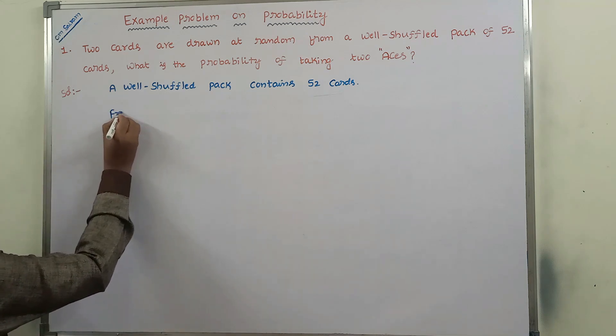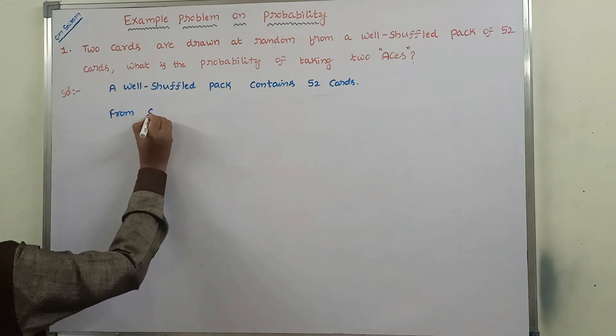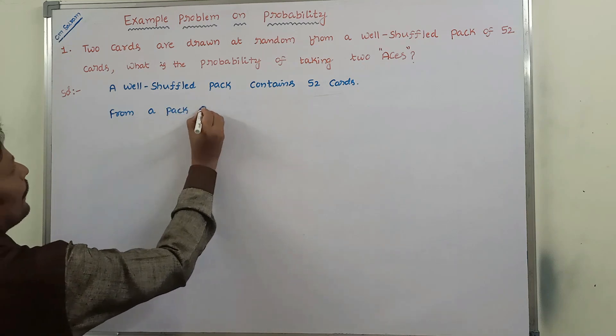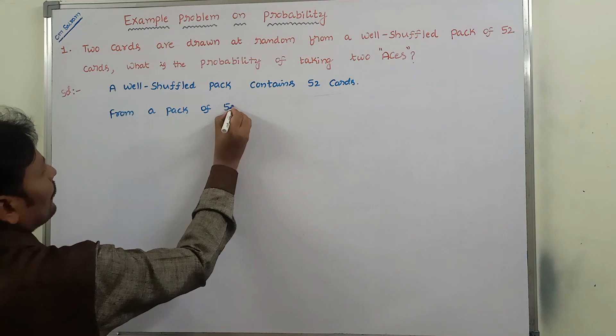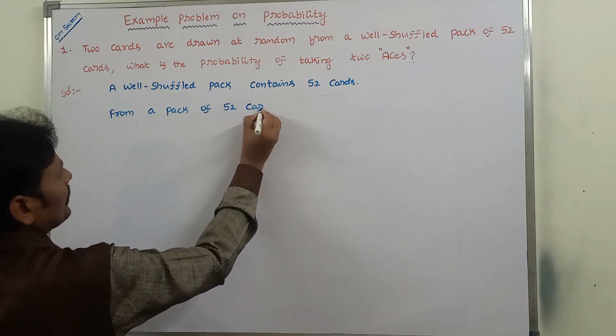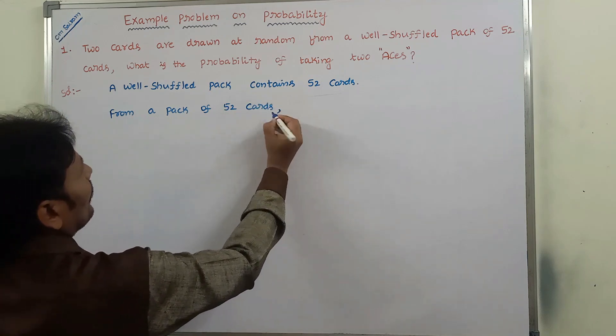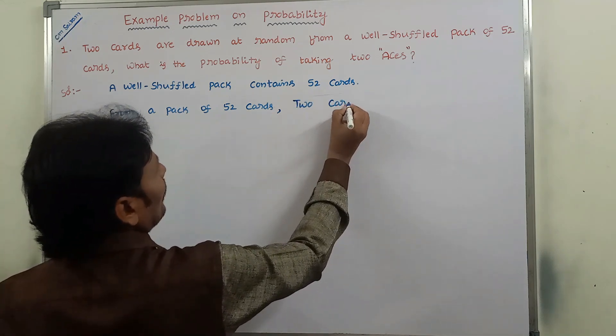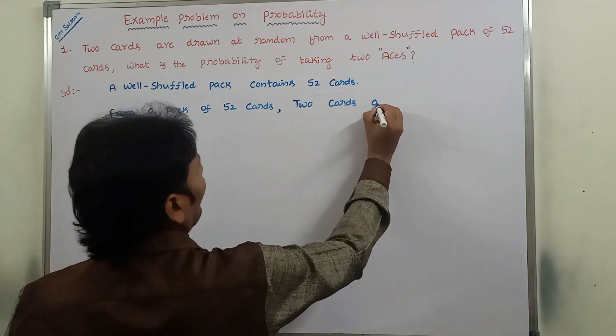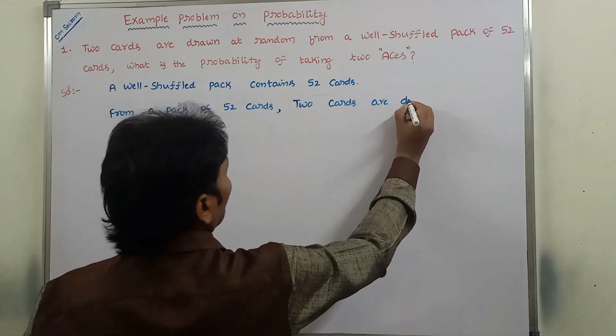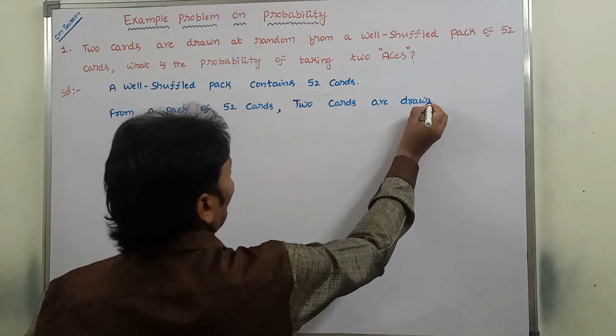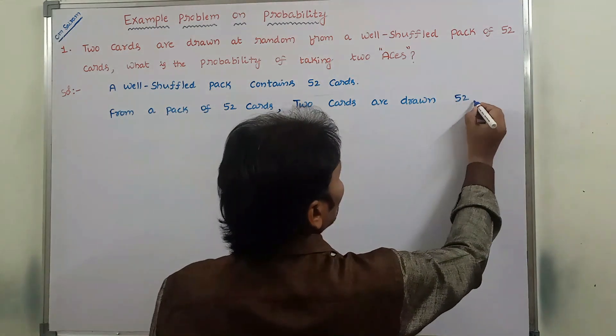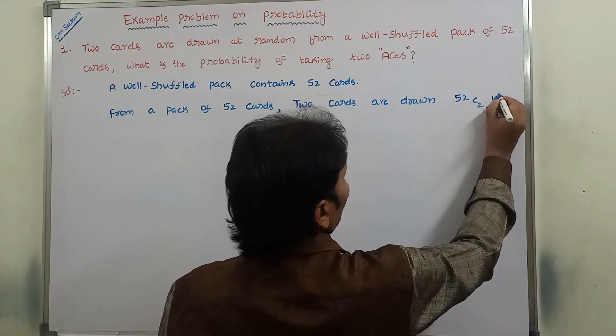From a pack of 52 cards, two cards are drawn. How many number of ways? 52 C 2 ways.